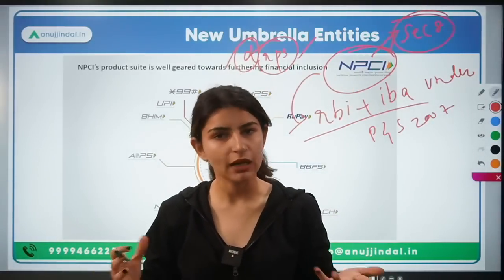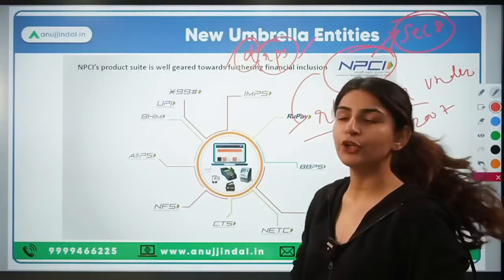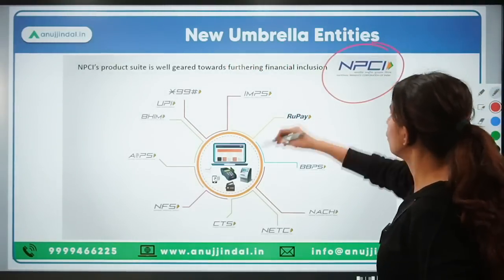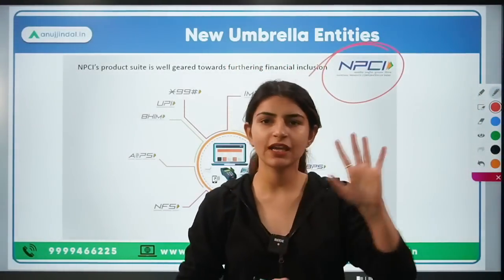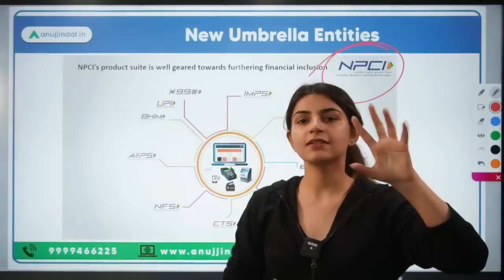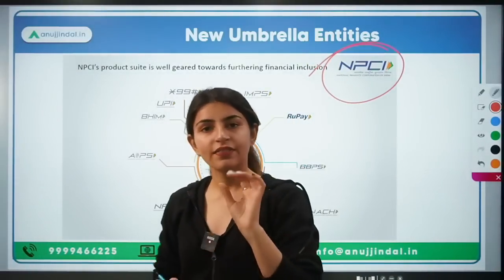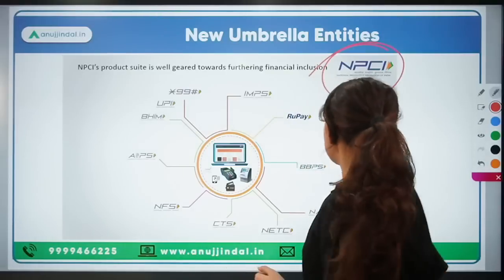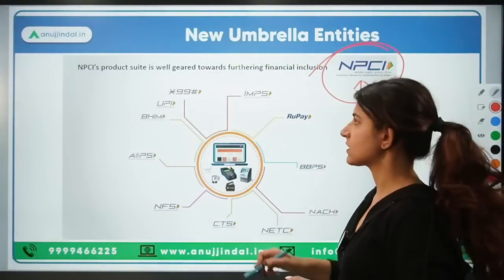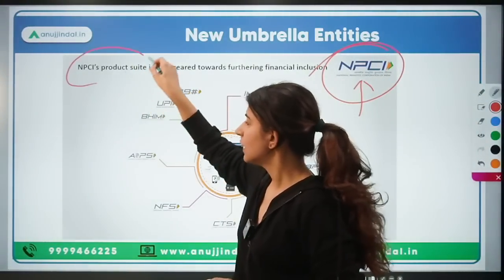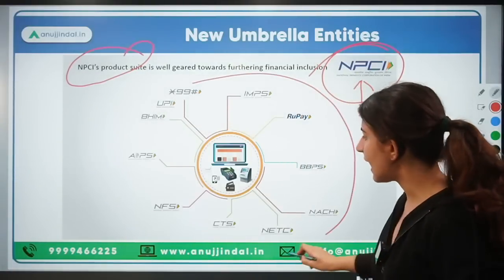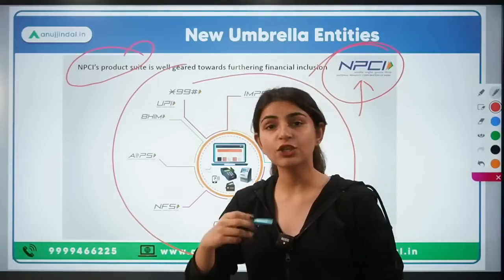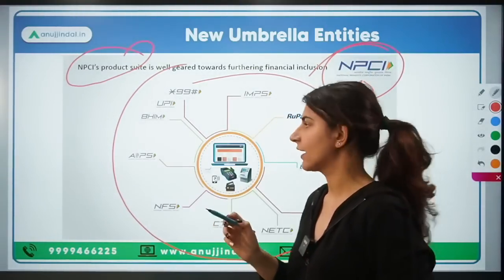But why are we learning about NPCI when we were talking about new umbrella entities? Because new umbrella entities will be an alternate to NPCI. NPCI, for its management of the retail payment system, has brought out various products so that digital retail payments work easily and seamlessly.